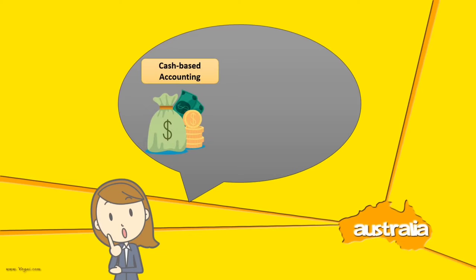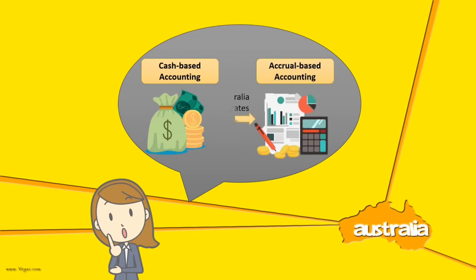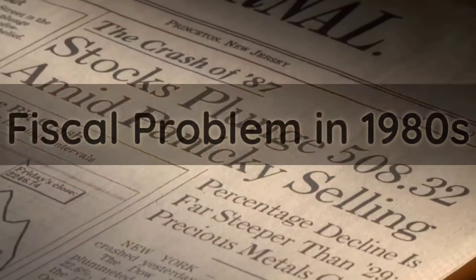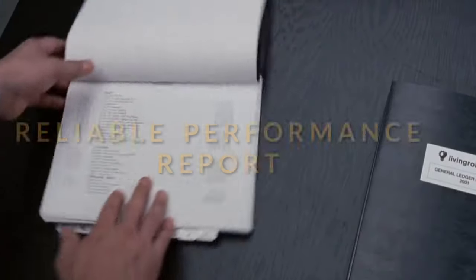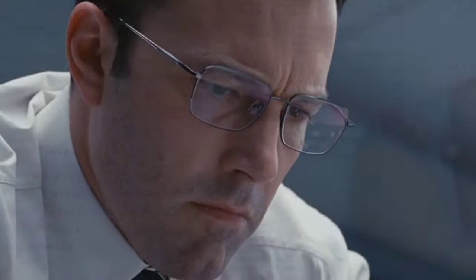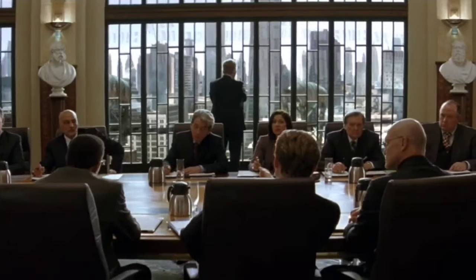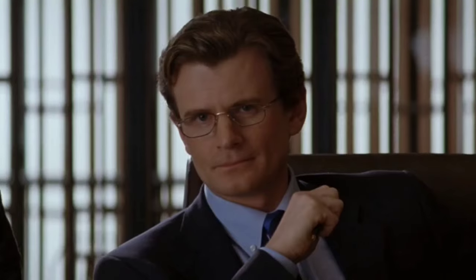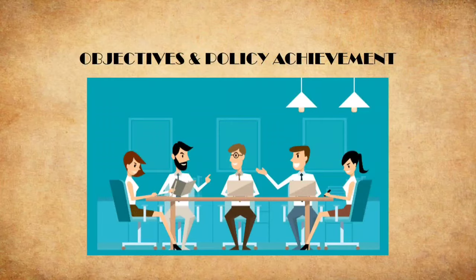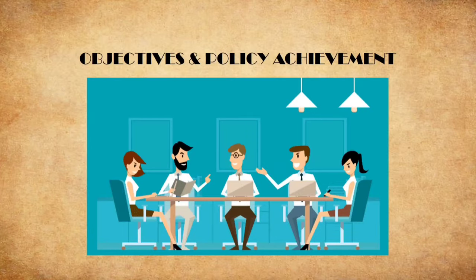Why did Australia migrate from cash basis to accrual basis accounting? First of all, due to the fiscal problems in the 1980s, this problem resulted in demands for reliable performance reports, beneficial information to help managers on cost control, as well as the identification of costs and liabilities incurred. Additionally, programs and performance of Australia needed to be defined in the aspect of financial matters rather than objective and policy achievement.